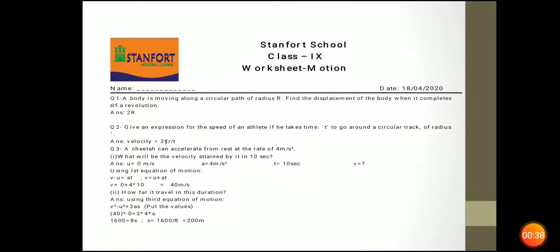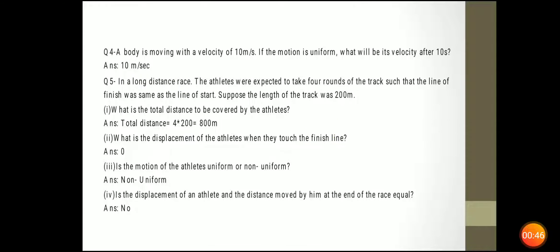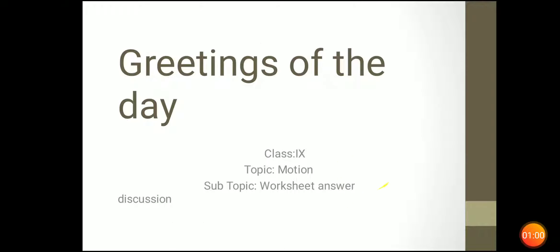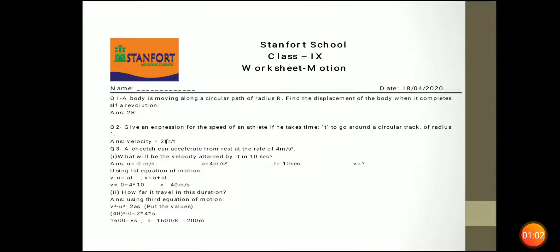Give an expression for the speed of an athlete if he takes time T around a circular track. The radius is R. The speed is 2πR upon T — 2πR is your distance and time is T.